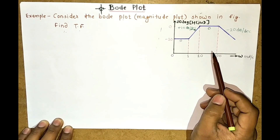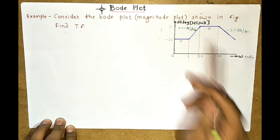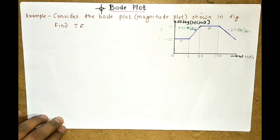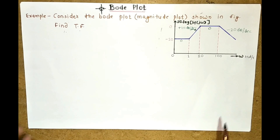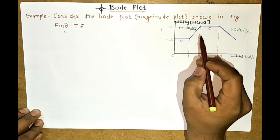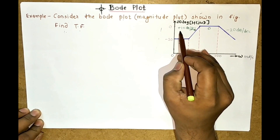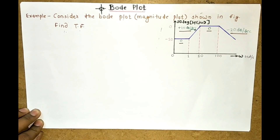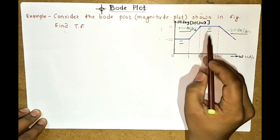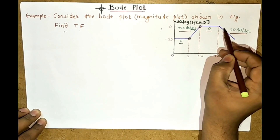The magnitude plot has different slopes. If you observe, there is a zero slope, then a plus 20 dB per decade slope, then again zero slope, and then a minus 20 dB per decade slope. The point where the slope is changing is called the corner frequency. Let us say these are the first, second, and third corner frequencies.